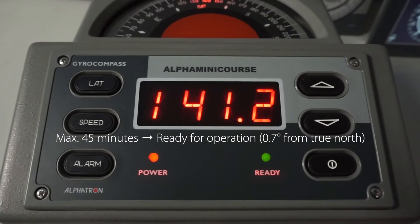It takes the Alpha MiniCourse 8 seconds to speed up to 30,000 RPM. Then, it needs maximum 45 minutes to get ready for operation.